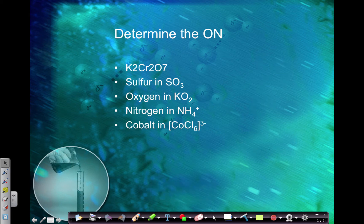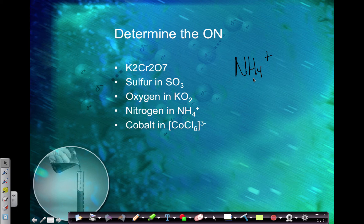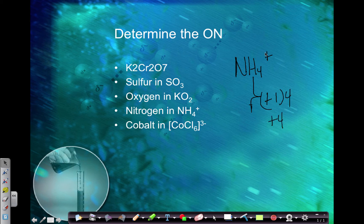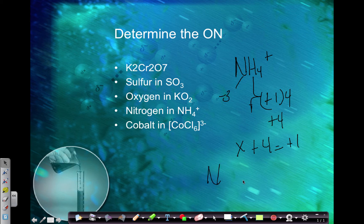Let's look at nitrogen in ammonium, NH4+. The overall charge is positive one. Hydrogen is in group one — it's usually positive one. There are four of those, so that's positive four. Overall it needs to be positive one, so what plus four gives positive one? That would be negative three. Since there's only one nitrogen atom, nitrogen's oxidation number is negative three.